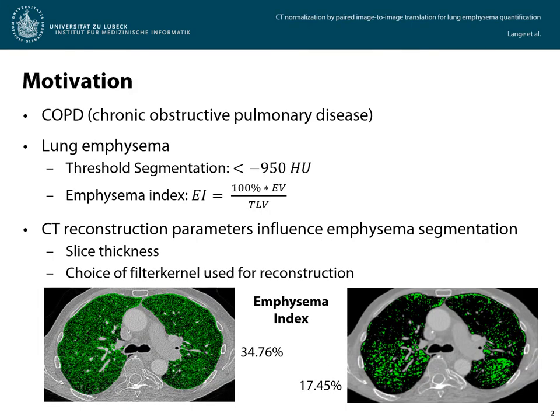The motivation for this research is the widespread chronic obstructive pulmonary disease, short COPD, which causes alveolar obstructions called lung emphysema. In computer tomography of the chest, lung emphysema regions can easily be segmented by applying a threshold at less than minus 950 Hounsfield units inside the lung. From the segmentation, the emphysema index can be calculated as EI equals 100% times the emphysema volume divided by the total lung volume. The difficulty of the segmentation is its strong dependence on CT parameters, such as slice thickness and the filter kernel used for reconstruction of the images from the raw data.